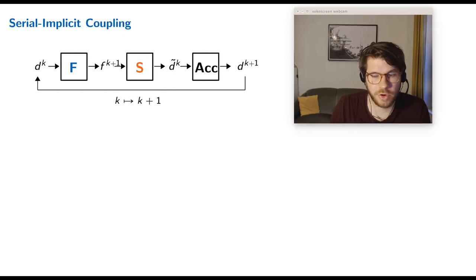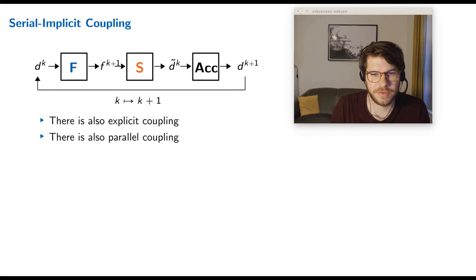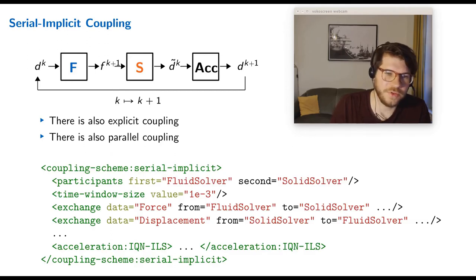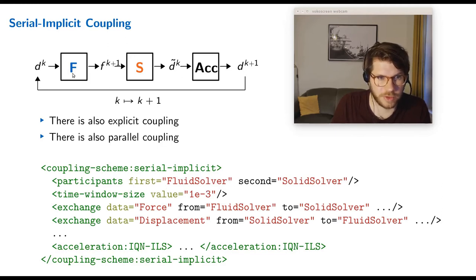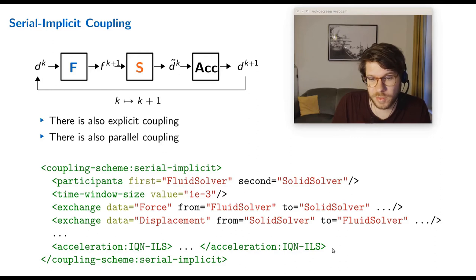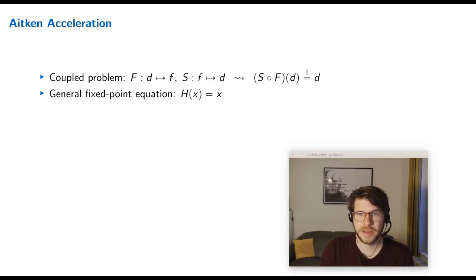This is serial implicit coupling. In preCICE you can also choose explicit coupling — that means you don't check for convergence but directly go to the next time step. You can also use parallel coupling, where fluid and solid run at the same time. In the preCICE config, we define a serial-implicit coupling scheme, specify the first participant (fluid solver) and the second (solid solver), define the time window size, what data we exchange (forces from fluid to solid and displacements from solid to fluid), and optionally an acceleration scheme.